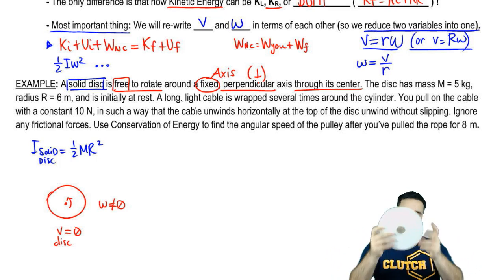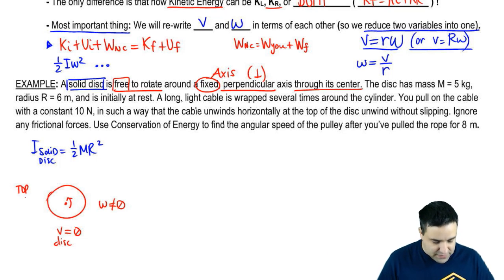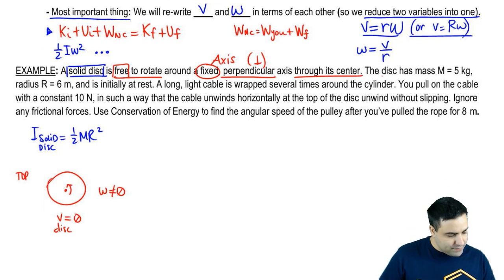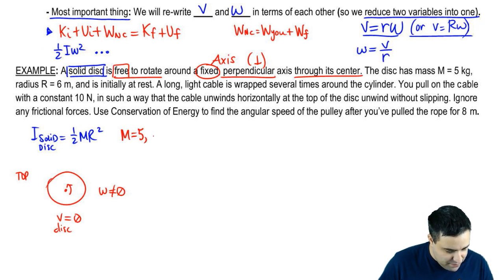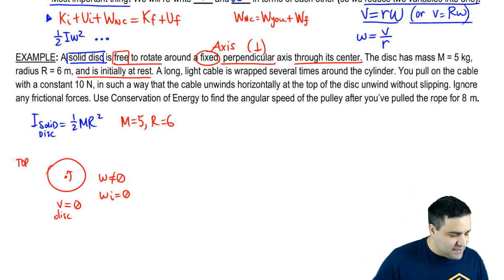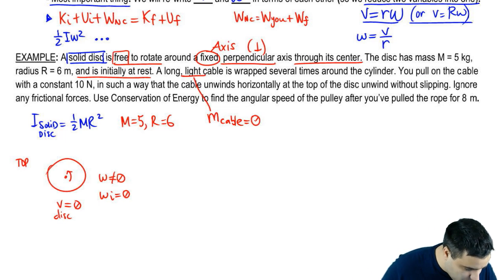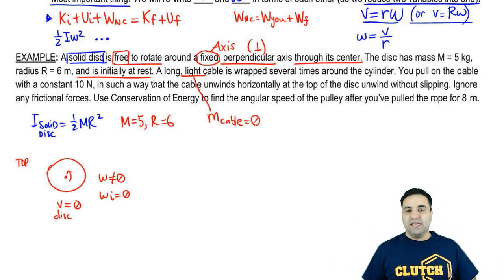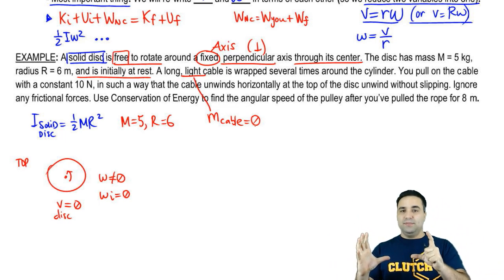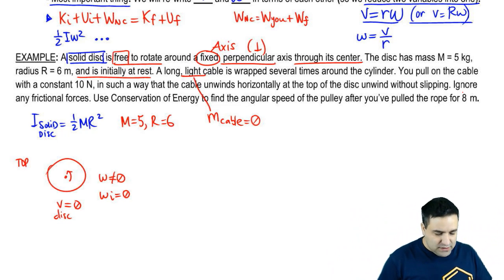The disk has mass M = 5, radius R = 6, and it is initially at rest, so omega initial is 0. There's a long, light cable wrapped several times around the disk. Light means the cable has no mass. You wrap it up a bunch of times, and basically we're setting up so that when you pull on it, it's going to unwind. You pull on the cable with a constant 10 newtons.